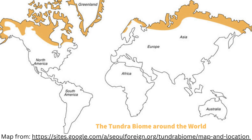This image highlights the parts of the world in which you can find the tundra biome. The tundra begins just below the ice caps of the Arctic and extends across North America to Europe, Siberia, and much of Canada and Alaska. This biome can also be found at the tops of mountains, as temperatures are typically cooler at higher altitudes.